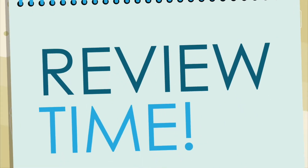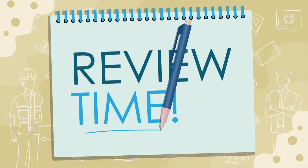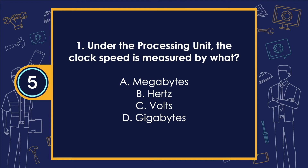Students, let us now have a short review based on our topic. Number 1: under the processing unit, the clock speed is measured by what? The correct answer is letter B — hertz.